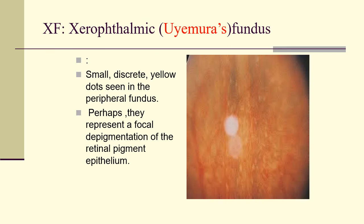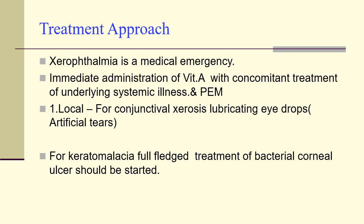XF is the xerophthalmic fundus, also called Uyemura's fundus. Small discrete yellow dots are seen in the peripheral fundus after pupil dilation — they represent focal depigmentation of the retinal pigment epithelium. If your viva question is on vitamin A deficiency, the examiner may ask what is Uyemura's fundus — it is the ophthalmoscopic finding of the xerophthalmic fundus.